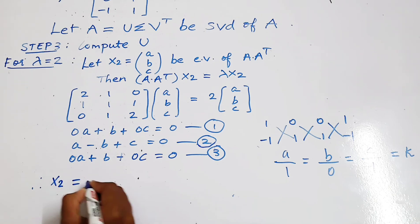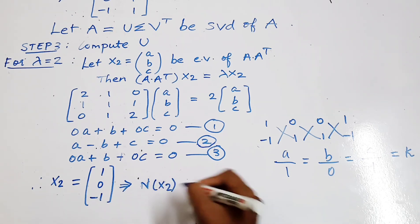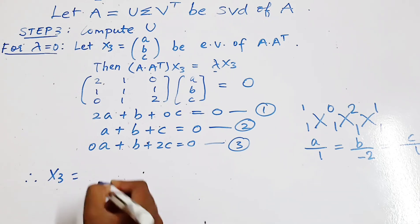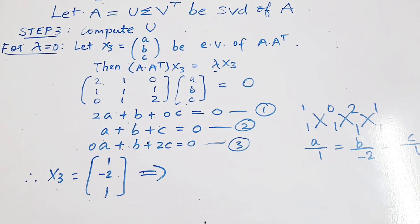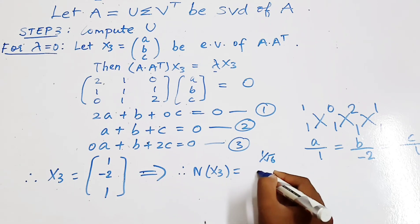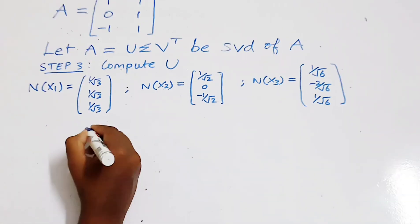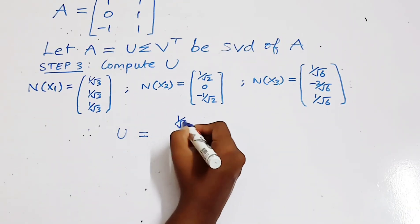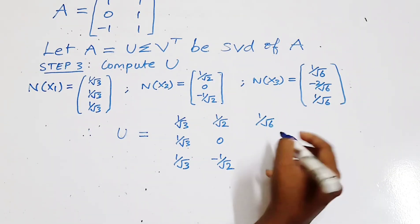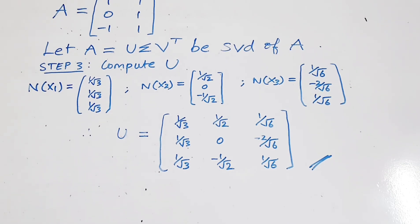Similarly, the other two normalized eigenvectors for the corresponding eigenvalues are found. So we have found all normalized eigenvectors. The U matrix can be written as: first column [1/root 3, 1/root 3, 1/root 3], second column [1/root 2, 0, -1/root 2], third column [1/root 6, -2/root 6, 1/root 6]. This is our U matrix.